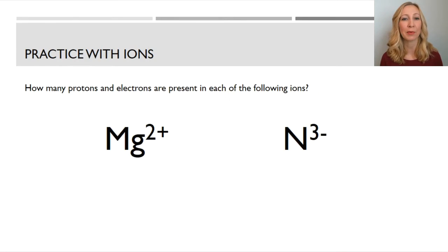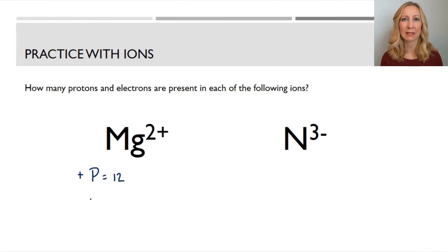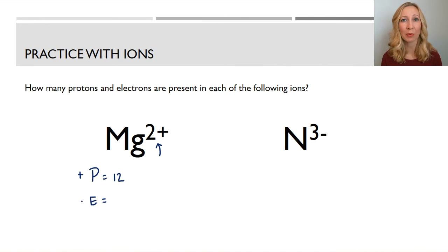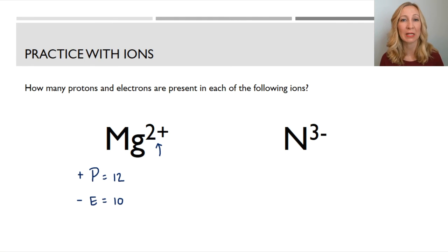Let's take a look at some practice examples: how many protons and electrons are present in each of the following ions? We have magnesium with a positive 2 charge. All magnesium atoms have 12 protons — no matter what, if it's magnesium, it has 12 protons. Since it has a positive 2 charge, it has 2 fewer electrons than protons. So this magnesium ion has 12 protons and 10 electrons.